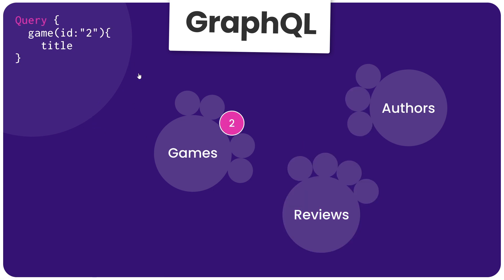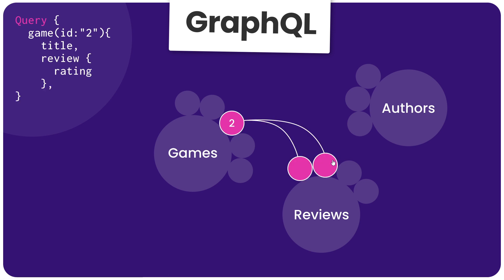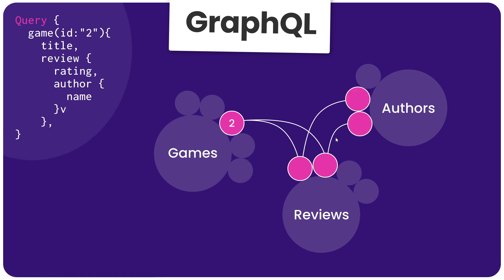Another example could be that my initial entry point is a specific game with a certain id, and the query would look something like this where we specify the id of the game as a variable — we'll learn more about query variables later on. Having jumped in at that game, I could also say get me any reviews related to that game and just get the rating field from those reviews. And to take it one step further, I could also say get me the author of each of those reviews and just give me their name. You can see how this graph idea lets us jump in somewhere and navigate between related data — fetching it all in a single query. That is the crux of GraphQL.